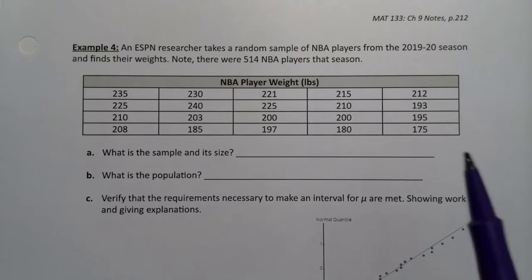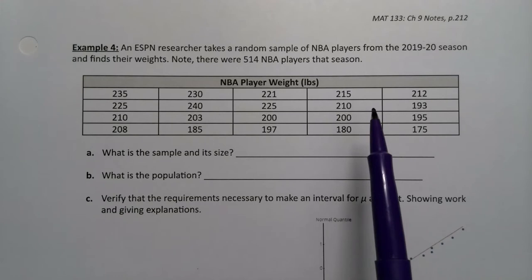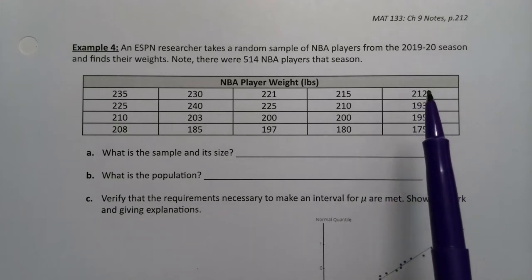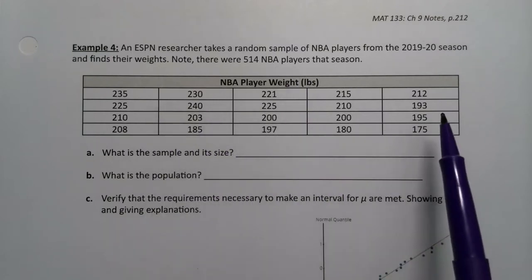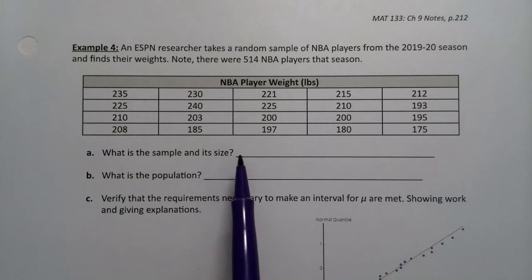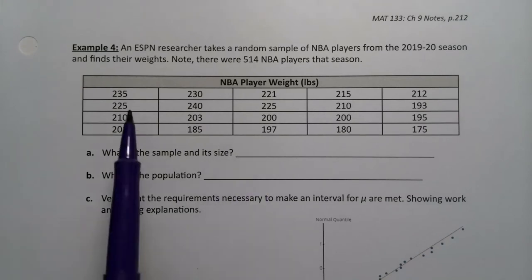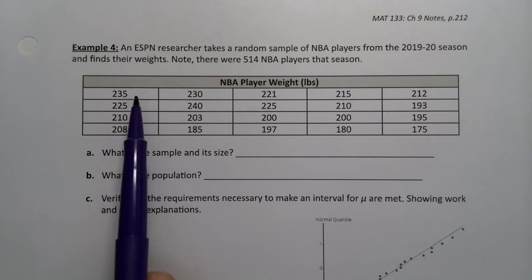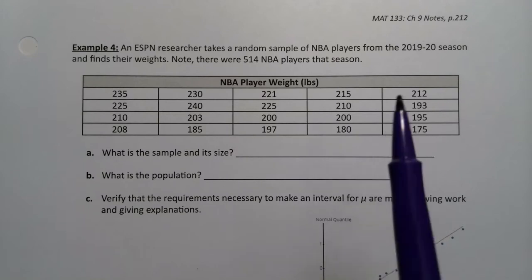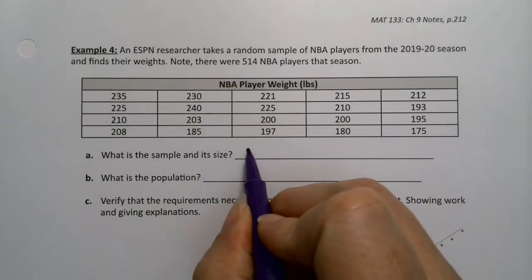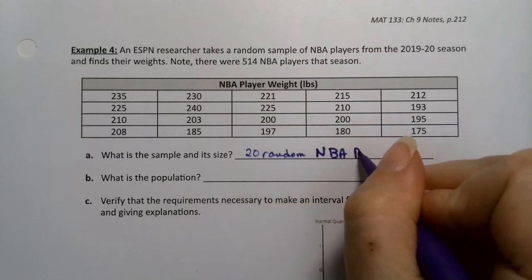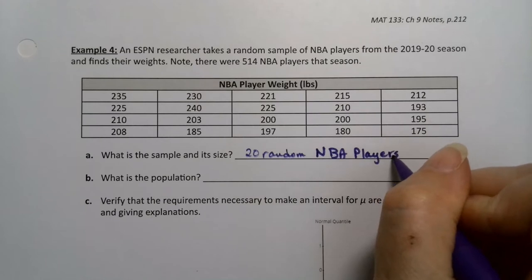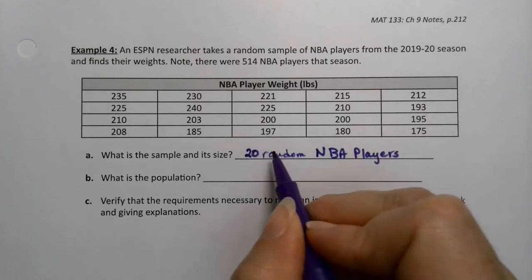Here I have a random sample of NBA players from the 2019-2020 season. There were 514 NBA players total for that season but this is just a sample of some of them. So first of all, what is the sample and what is its size? Well, I didn't give it to you this time you're going to have to count. There's four rows and five columns, so it was 20 random NBA players.